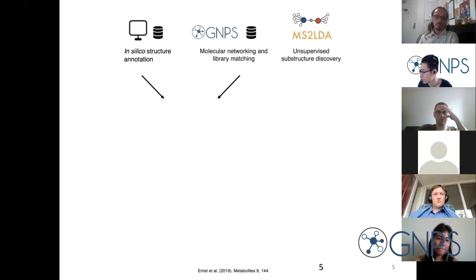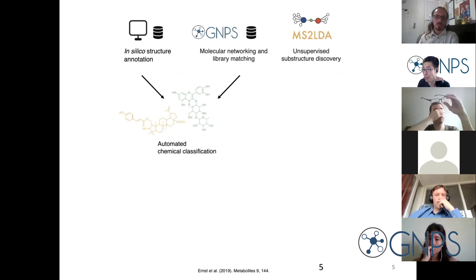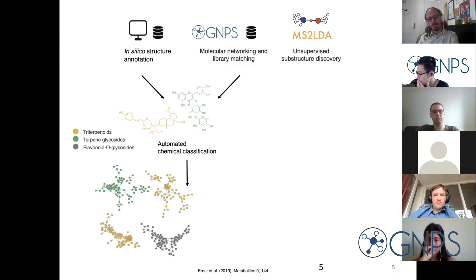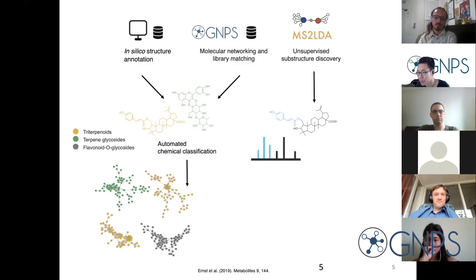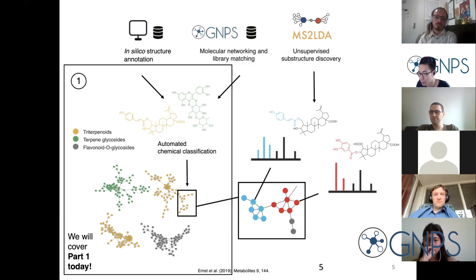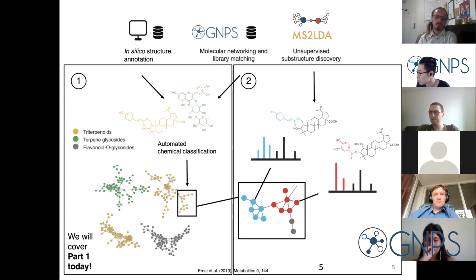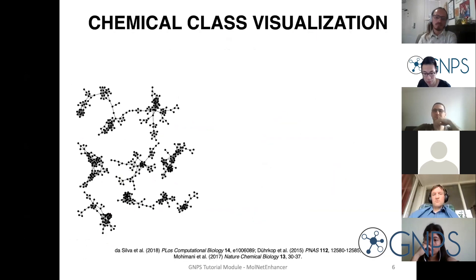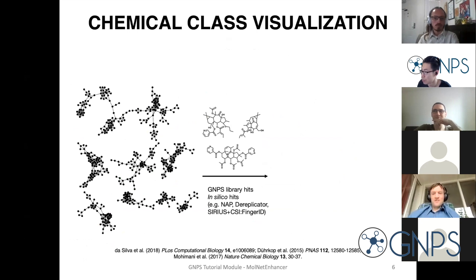MolNet Enhancer addresses this by integrating chemical structural information from multiple metabolomics mining tools, thus enhancing chemical structural information obtained within a typical metabolomics experiment. On one hand, we integrate and summarize structural hits from GNPS library matching as well as in silico structure annotation onto the network through automated chemical classification, so the most predominant chemical classes retrieved through these tools can be highlighted in the molecular network. Secondly, we also integrated information retrieved from MS2LDA into the molecular networks. Since this is only a short tutorial session, we will focus on the chemical classification part only today.